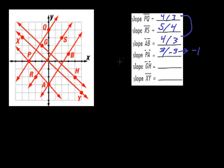And, let's move over to GH. So, G and H, I'm going to go 1, 2, 3, and 4 over negative 1, 2, 3, 4, and 5. So, I've got 4 over negative 5.